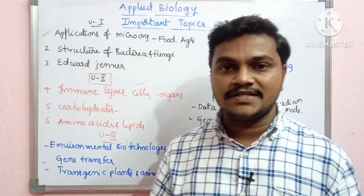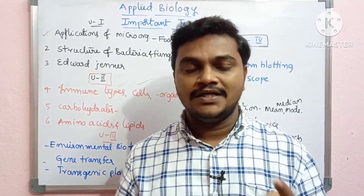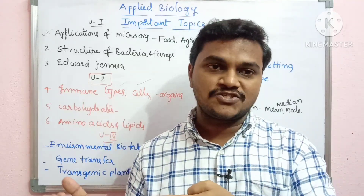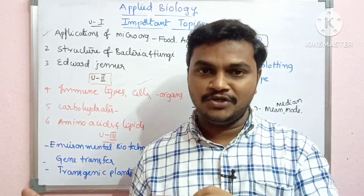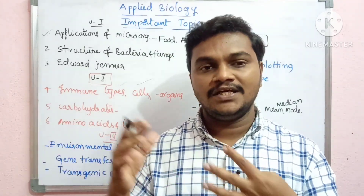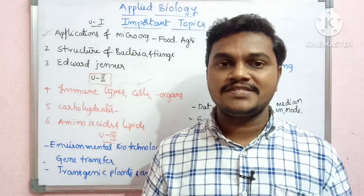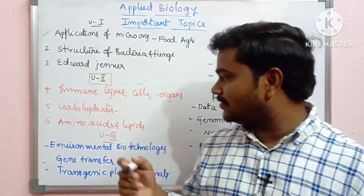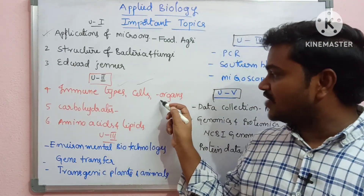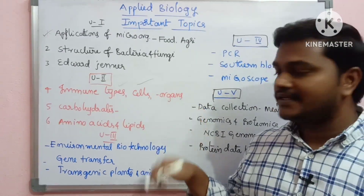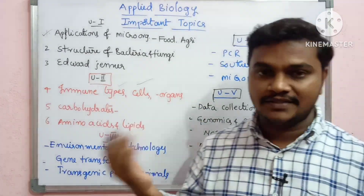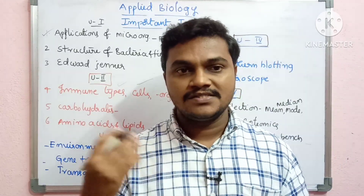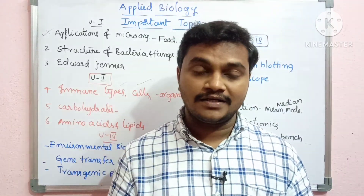In immune types, there are acquired immunity, natural immunity, and innate immunity. So there are different types of immune cells, and there are lymphoid organs — like primary lymphoid organs and secondary lymphoid organs.